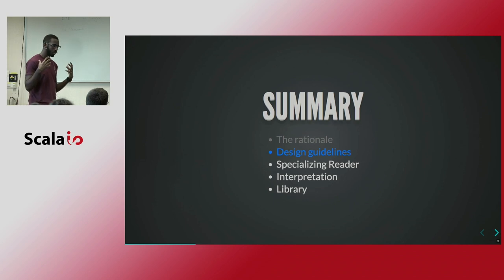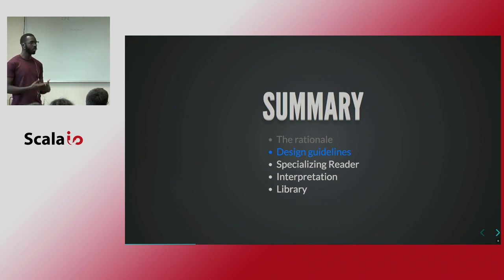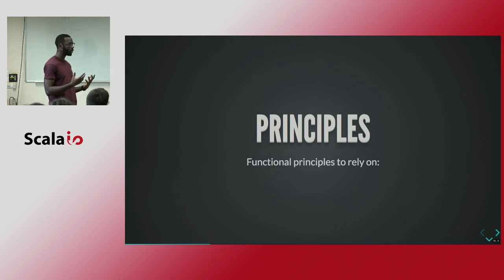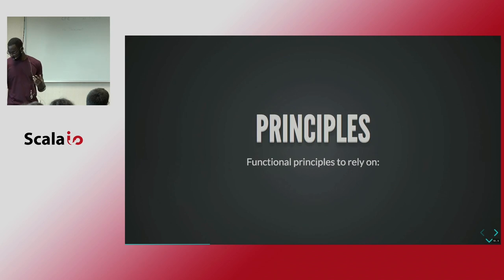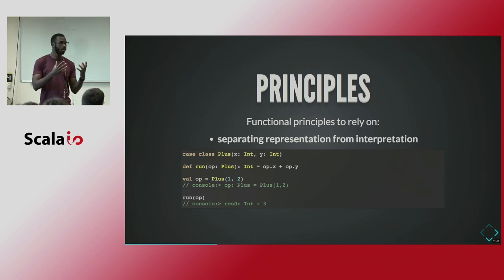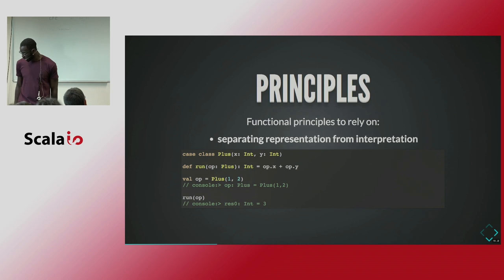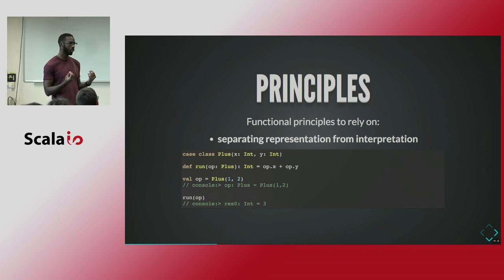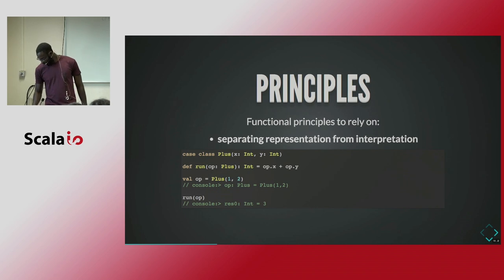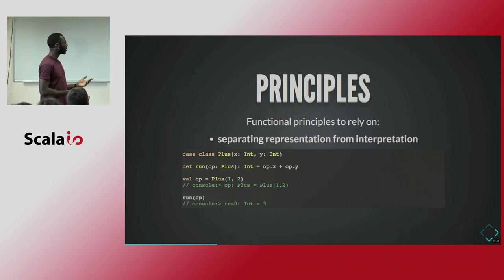So what we want to do now is pick some guidelines — some principles we could follow in order to design our solution. There are many functional programming principles we could use, but we'll just pick three. The first one is: separating the representation of our operation from their interpretation. I will illustrate that with a very simple example. Imagine we want to model in Scala a calculator, and that calculator only supports one operation: the plus operation.